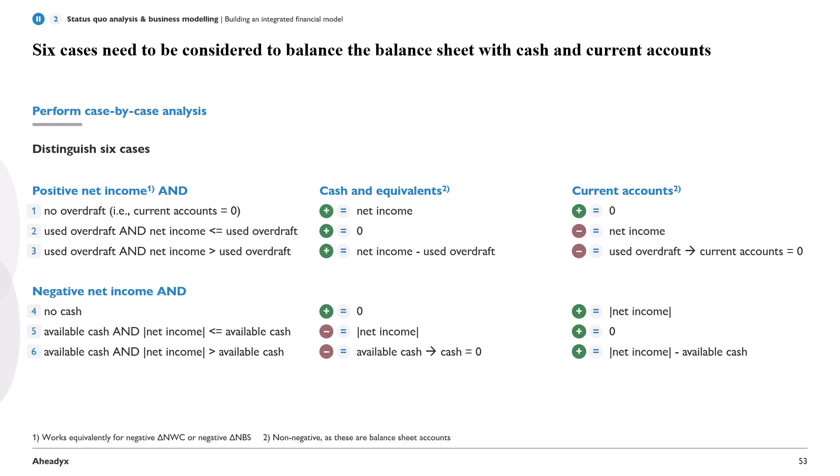Let's have a look into those six cases that we need to consider to balance the balance sheet. Suppose we're just looking at net income here. Let's start with the first one: let's assume that we have positive net income and no overdraft use — that is, counter-accounts in the balance sheet are zero.